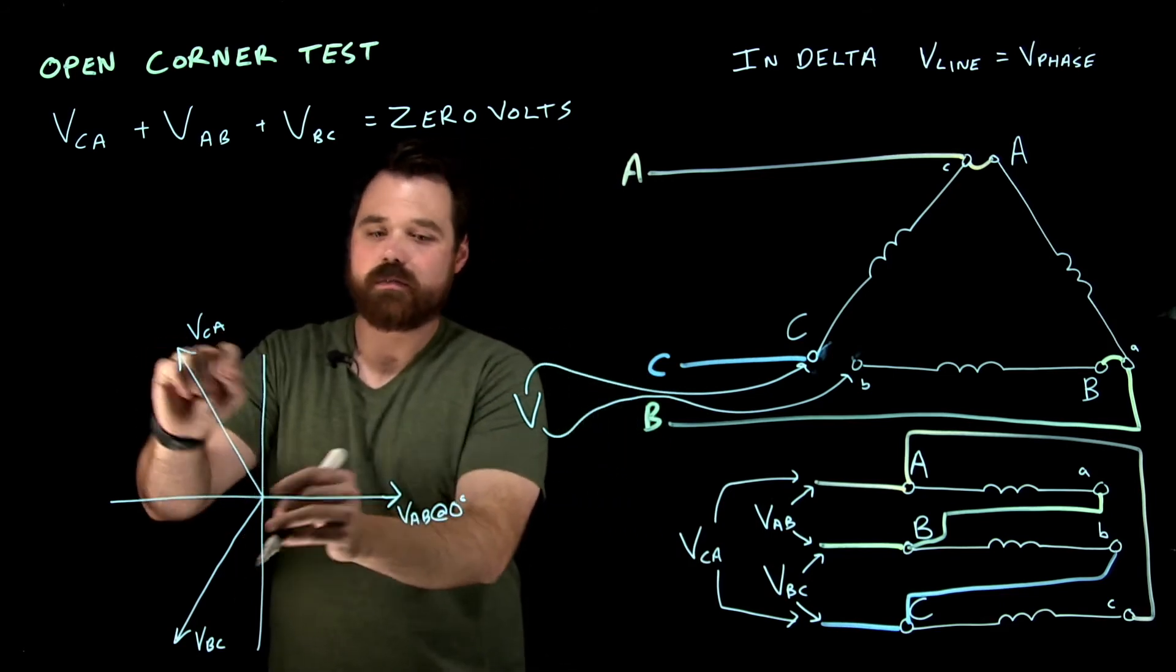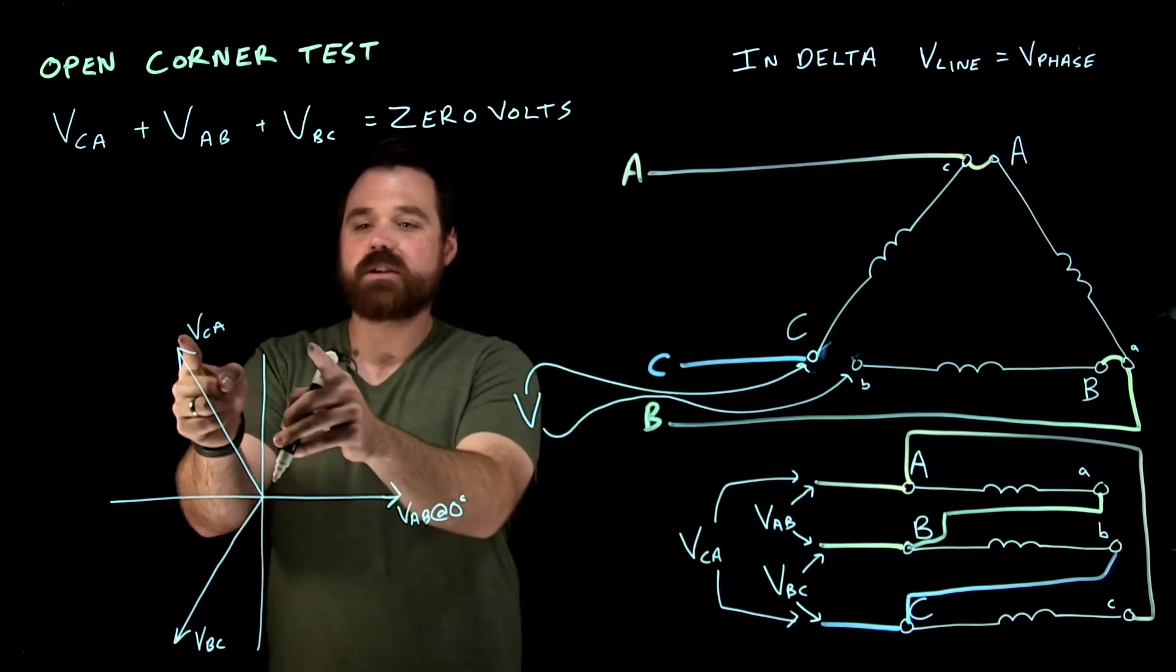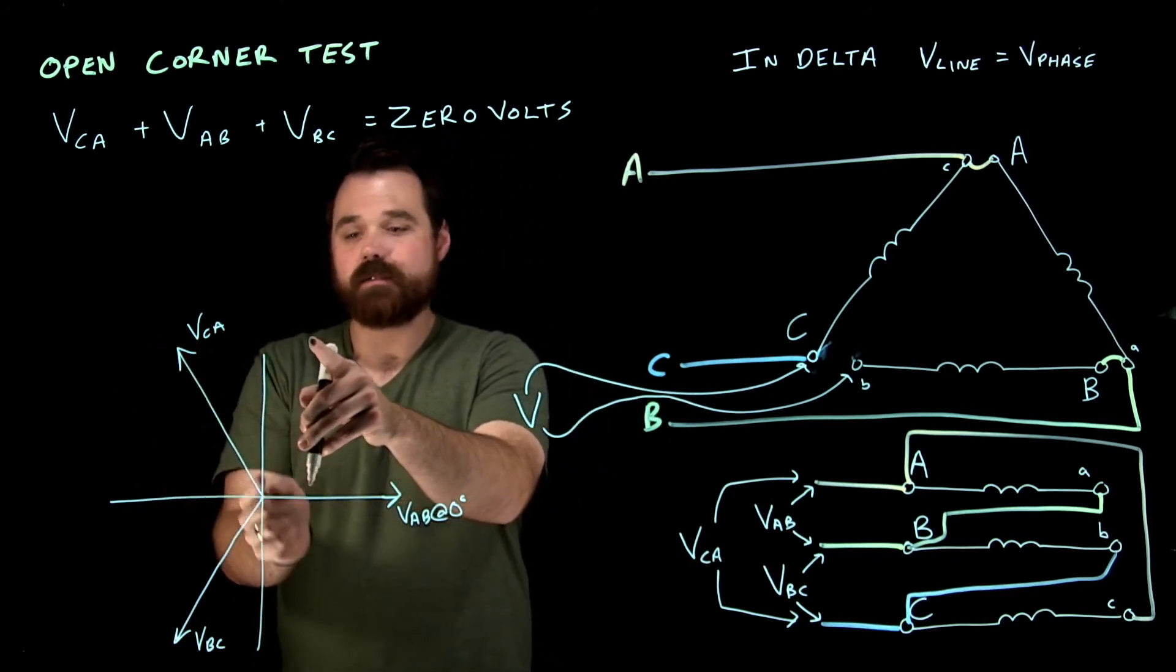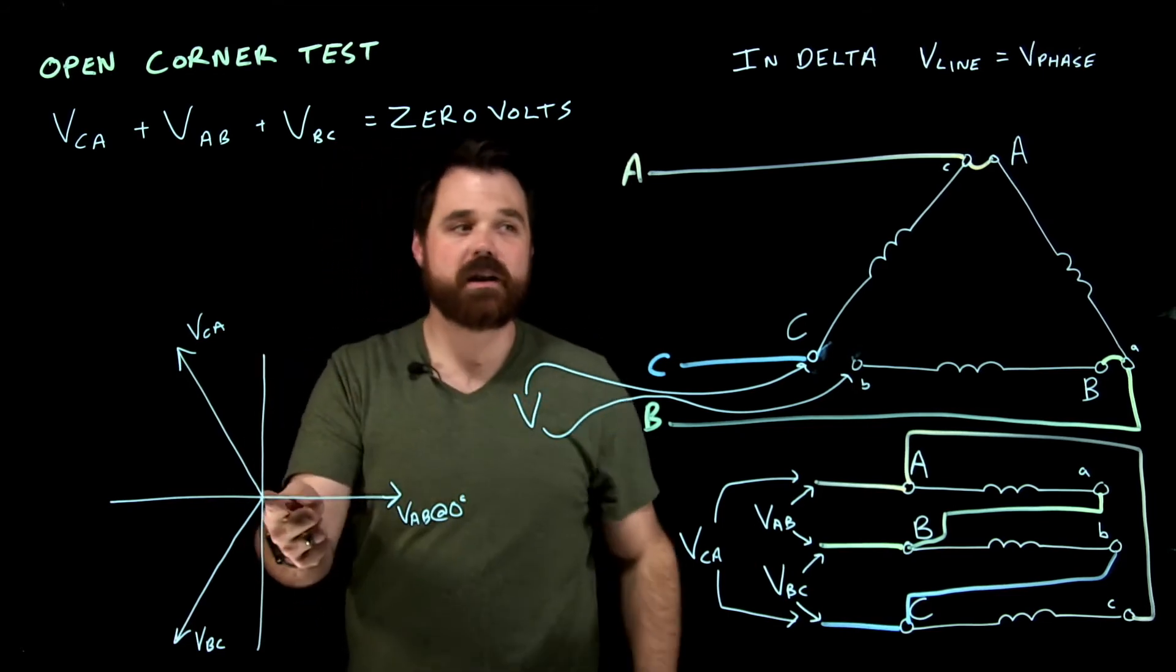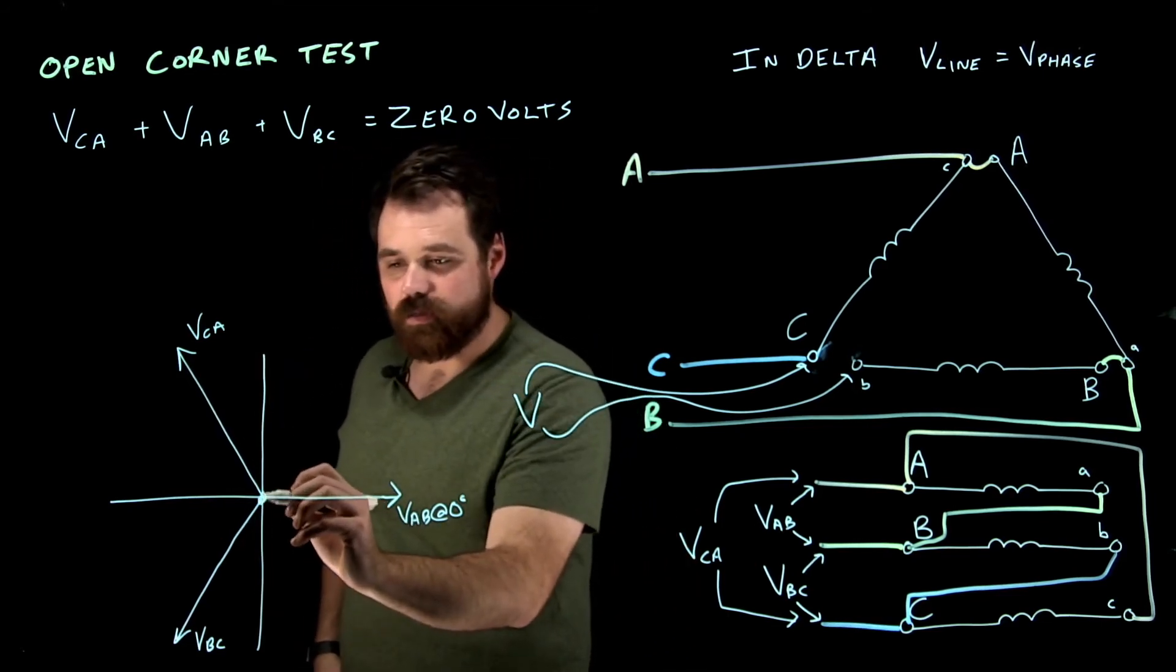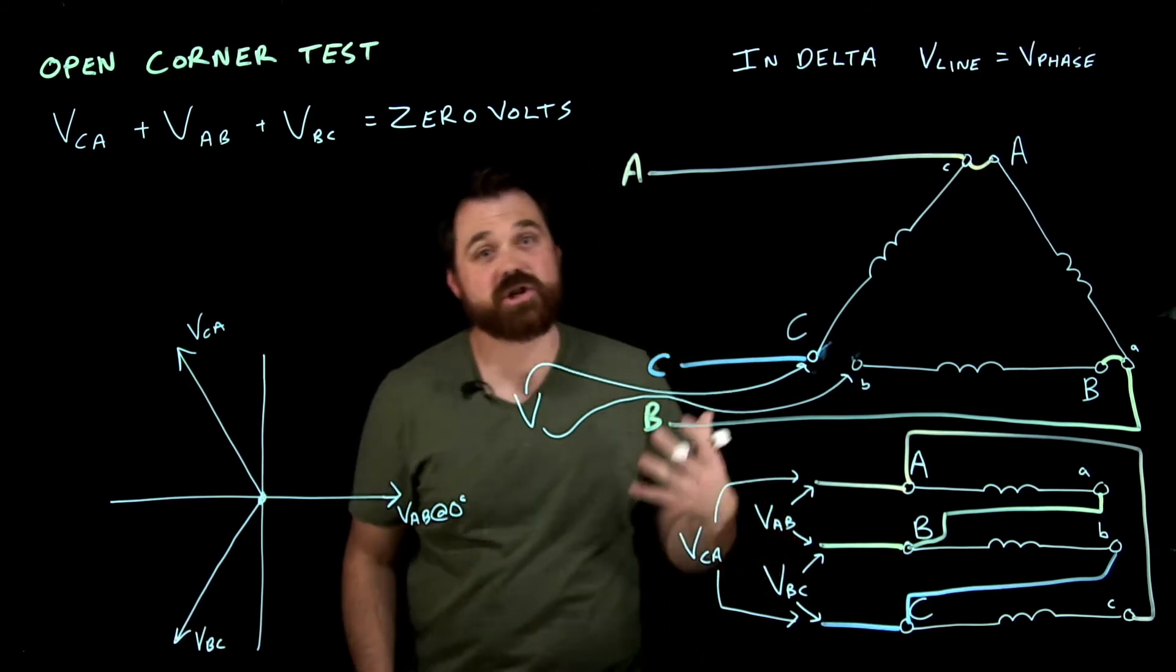So when I take C to A, I add A to B to it and then I add B to C to it, I should end up right back at that origin or right back at zero. So I should equal that out.